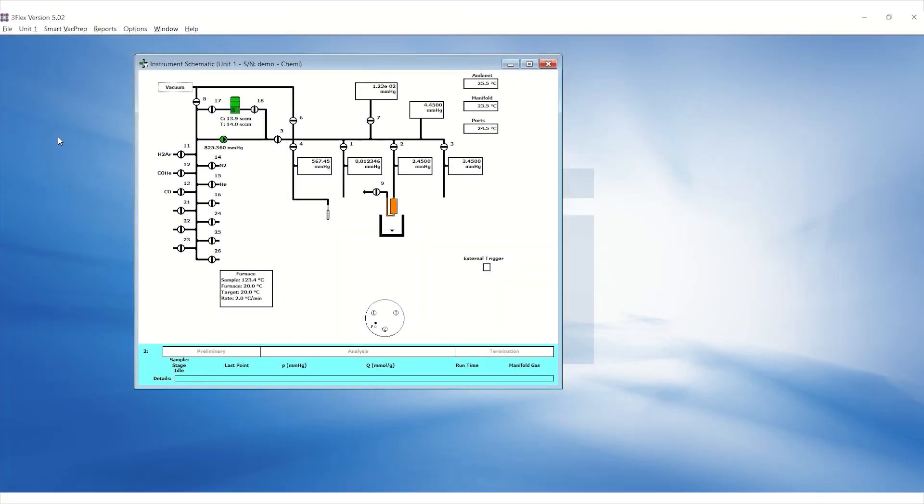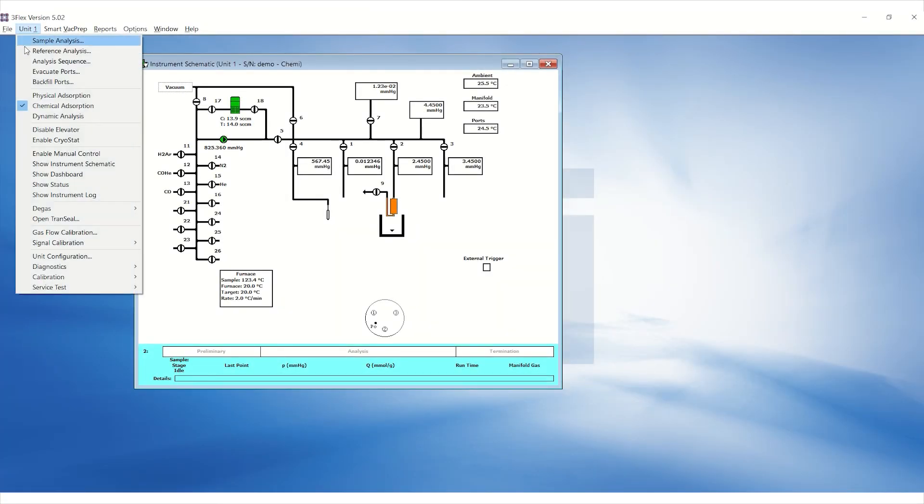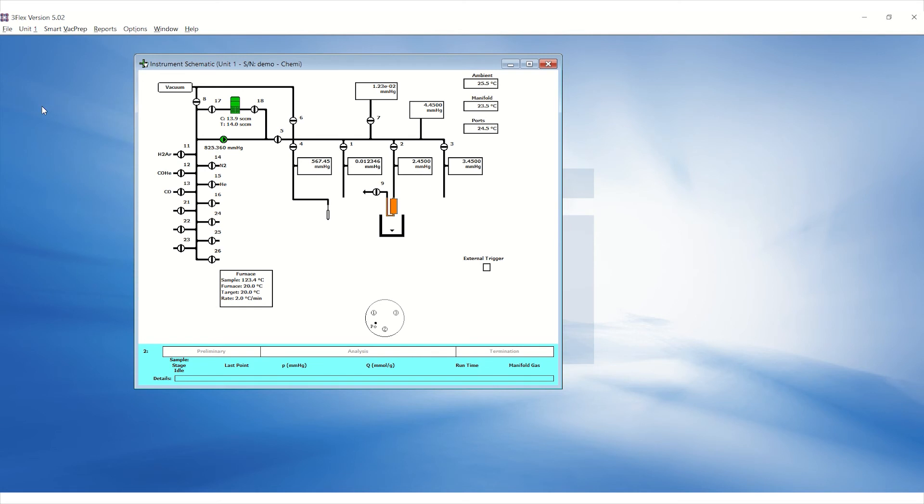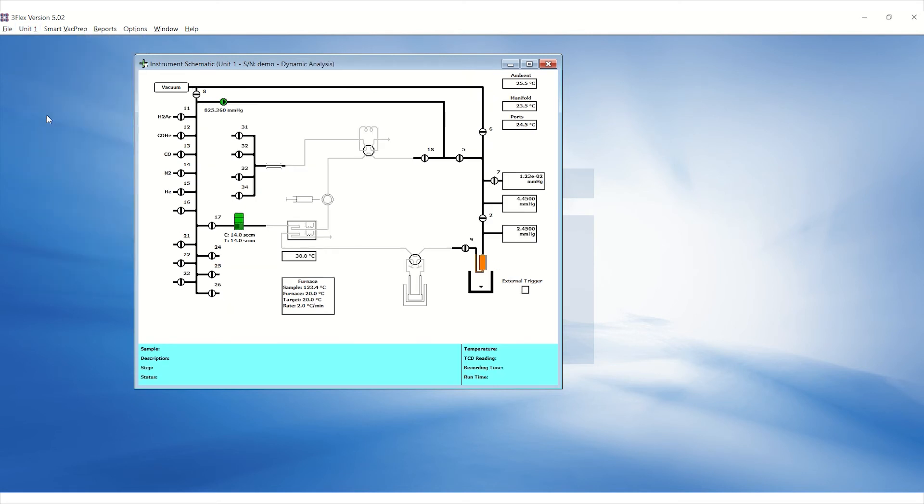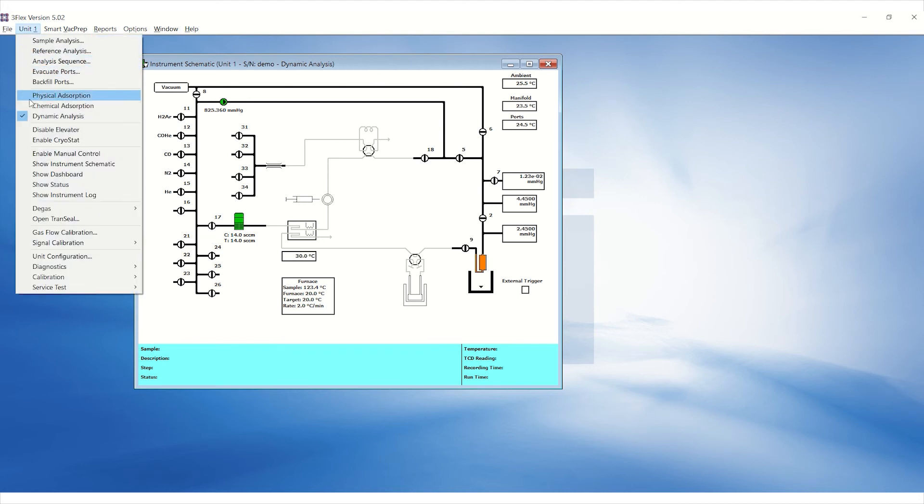In the Microactive software, go to unit and select chemical adsorption for static chemisorption or dynamic adsorption for dynamic chemisorption. Click on unit, enable manual control.